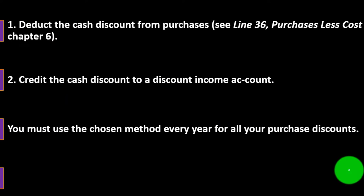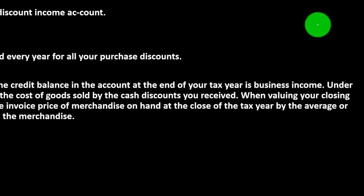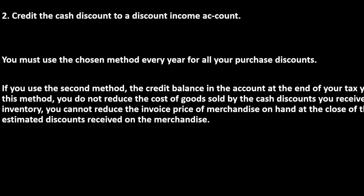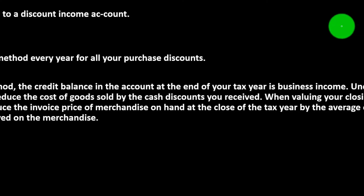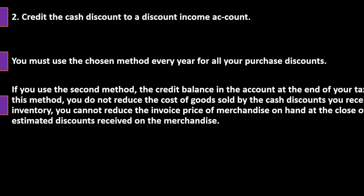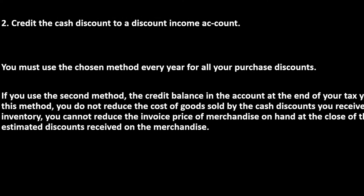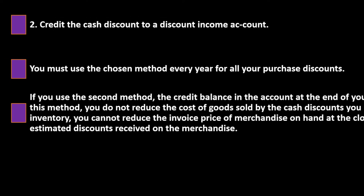You must use the chosen method every year for all your purchase discounts — consistency is required by the tax code and accounting in general. If you use the second method, the credit balance in the account at the end of your tax year is business income. Under this method, you do not reduce the cost of goods sold by the cash discount, and you cannot reduce the invoice price of closing inventory by an average or estimated discount received.